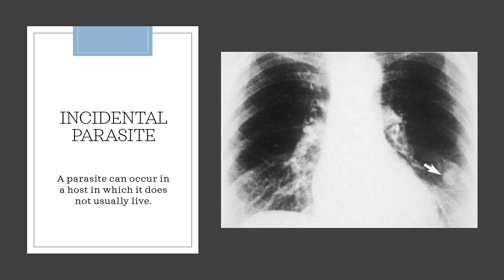A parasite can also occur in a host in which it does not usually live. This type of parasite is known as an incidental parasite. This is exemplified by the canine heartworm in humans. Humans can become infected with the larval stages of the canine heartworm, Dirofilaria immitis. Humans are not the usual host for heartworms, so canine heartworm is an incidental parasite in humans.